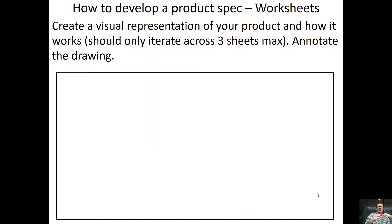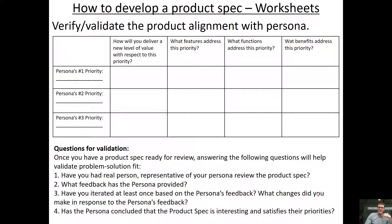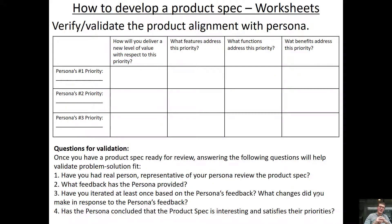The next thing to do is create a visual representation of how the product works — an annotated drawing. This will help you visualize the product. You'll then want to verify and validate the product's alignment with your persona. You should be able to pitch these questions to an imaginary persona, but these are also questions that might be interesting to pose to real people when you start doing primary market research, which you could already begin this week if you're ready.